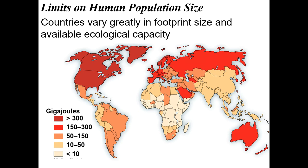If you look at countries and their carbon footprint in gigajoules — a measure of how much energy is used — you can see some parts of the world use a whole lot of energy per person while other parts use much less. As countries develop, they end up wanting things like cars and air conditioners, so you end up moving from a more moderate carbon footprint to a higher one.